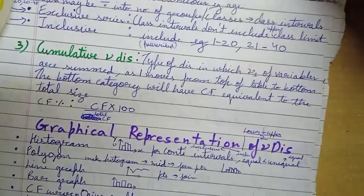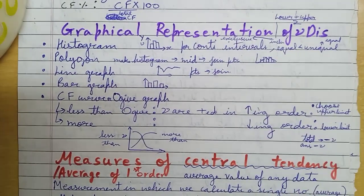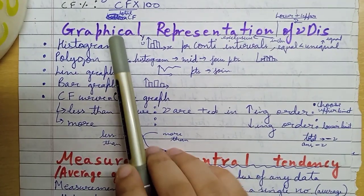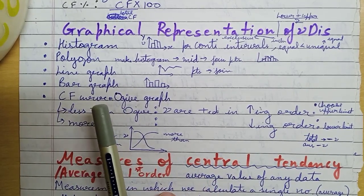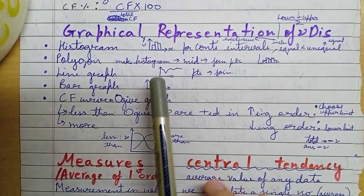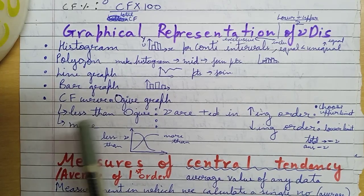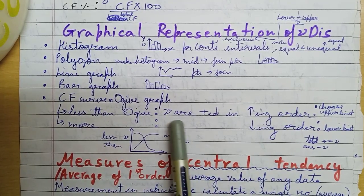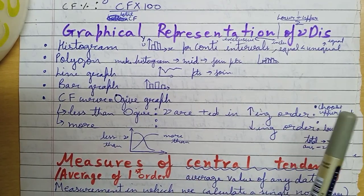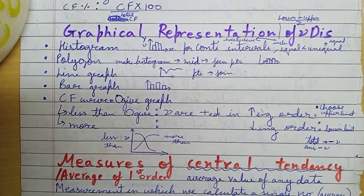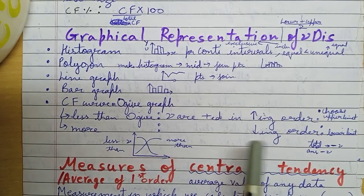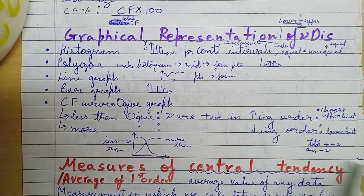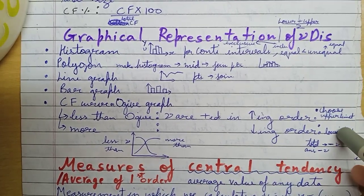Then frequency distribution is graphically represented through histogram, polygon, line graph, bar graph, cumulative frequency curve, and ogive. Less than ogive, which is in increasing order, uses upper limit. More than ogive, in decreasing order, uses lower limit.